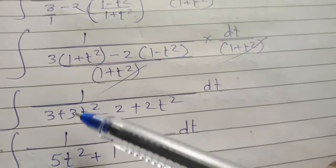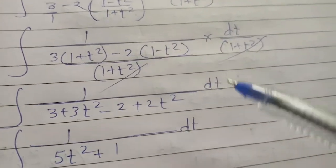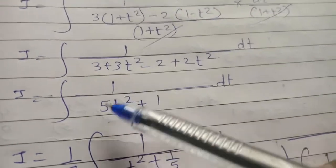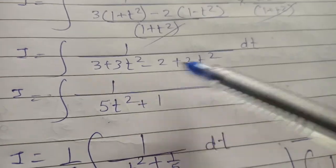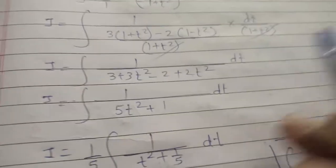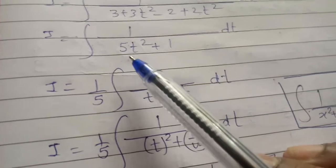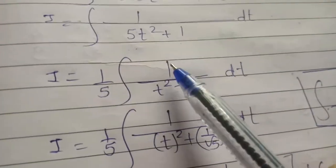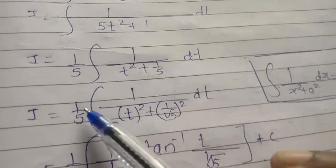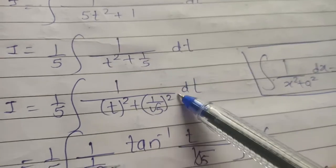Expanding the bracket: 3 plus 3t square minus 2 plus 2t square. So we get 1 upon (5t square plus 1) dt. Taking 5 outside the integration sign as a common factor, we get 1 upon 5 times integration of 1 upon (t square plus 1 upon root 5, bracket square) dt.